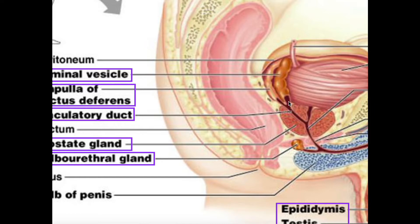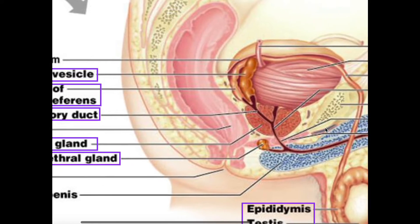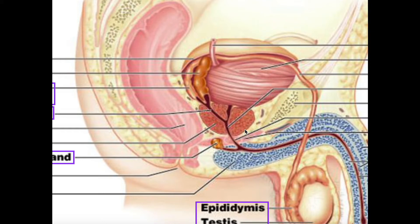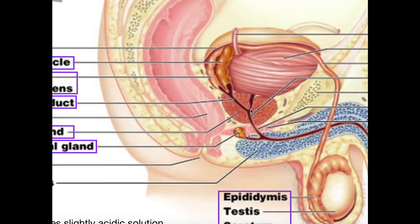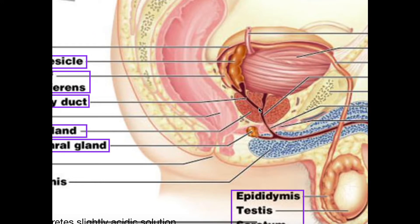The ejaculatory duct is going to move through this reddish structure called the prostate gland. It's important to realize that only men have a prostate gland. Women don't have a seminal vesicle or a ductus deferens either. The reason I emphasize the prostate is that when differentiating between a male and female urethra, the prostate gland is a very important landmark. This is the second gland we'll look at, and the ejaculatory duct moves through it.